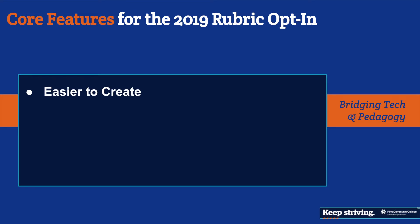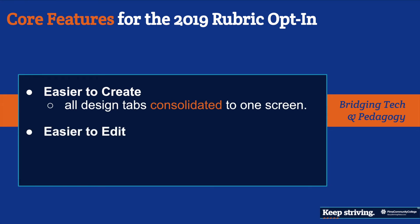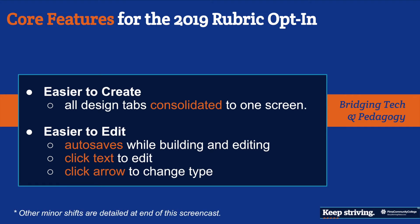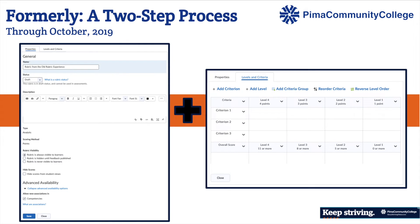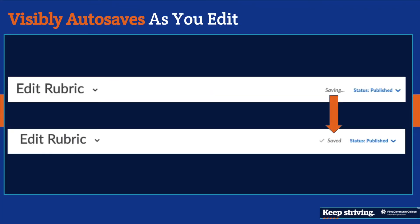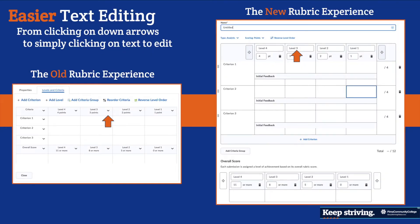The core features of this new design are really about ease of use. All design tabs are consolidated into one screen and it's much easier to edit. As you work, it auto-saves. You can simply click on the text to edit it, and click on the arrow to change the type. Previously there was a properties tab and a criteria tab with many options — now it's a clean single screen that shows whether your work is saving or saved.